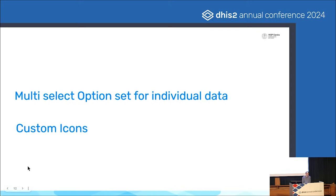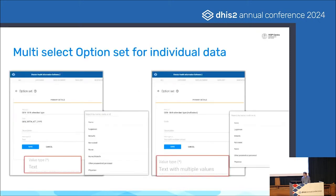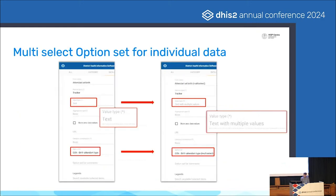Next, I'd like to introduce a couple of new features that will be repeated across the different products — things introduced in 41 that touch a lot of different product groups. We now have multi-select option sets for individual data, and custom icons. In the maintenance app there is a new value type for option sets: text with multiple values, as opposed to just text. So for example, instead of having a 'nurse/midwife' slash option, you can just select both midwife and nurse as relevant. If you add that option set to a data element, the value type will change to multiple values as well.